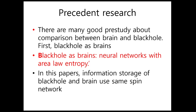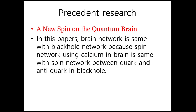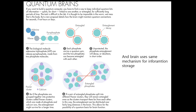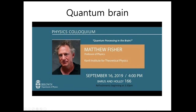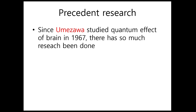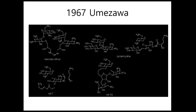There are many good prior studies on the comparison between brain and black hole. First, 'Black Hole as Brain' describes the black hole as a neural network with area-law entropy. In these papers, information storage of the black hole and brain use the same spin network. In 'A New Spin on the Quantum Brain,' the brain network is the same as the black hole network, because the spin network using calcium in the brain is the same as the spin network between quark and anti-quark in a black hole. This is Matthew Fisher, who proved quantum processing in the brain. Since Umeza studied the quantum effect of the brain in 1967, much research has been done.